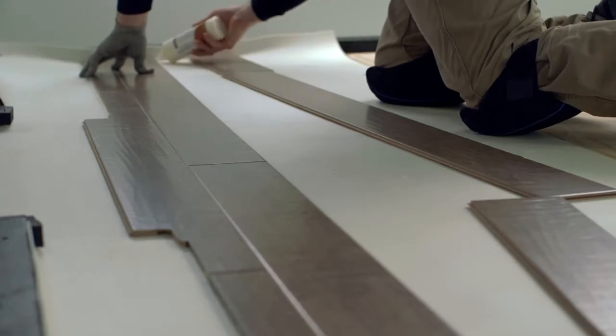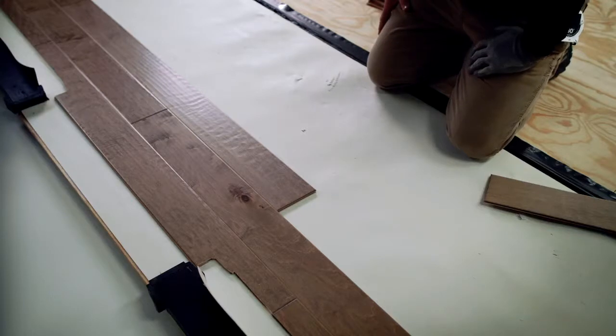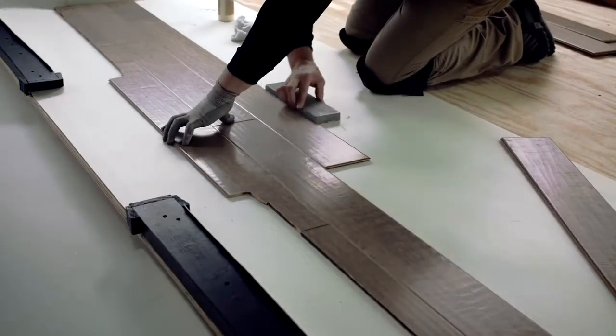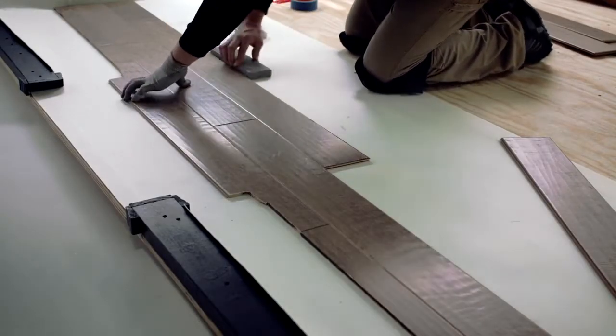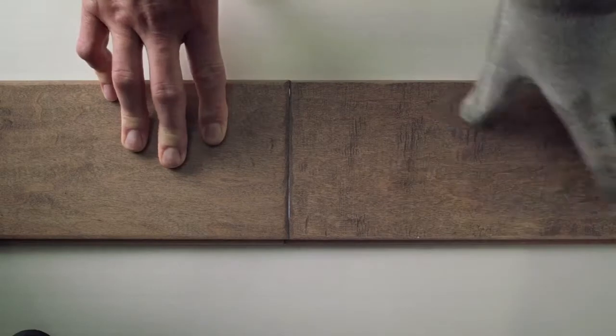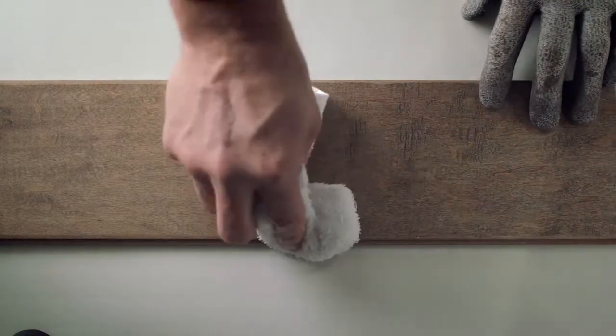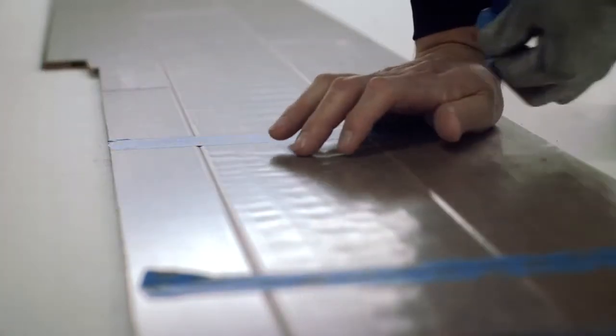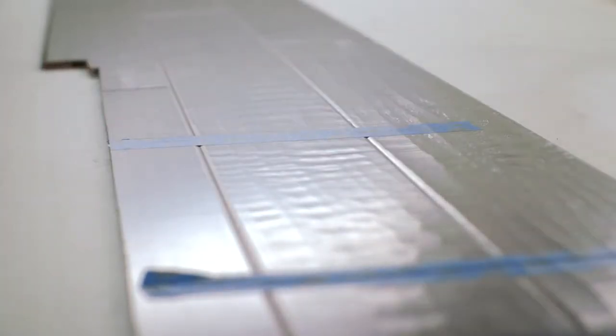You'll continue this same process down the entire second row. Proper alignment is critical. Misaligned starter rows can cause side and end gaps to appear in later rows of flooring, so keep an eye on your rows as you work to make sure nothing shifts out of place. Use a tapping block if necessary to close the boards together. Immediately wipe away any excess adhesive with a clean, slightly dampened cloth.